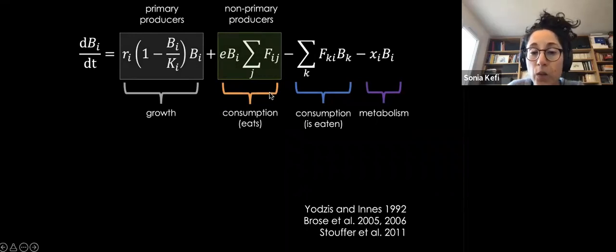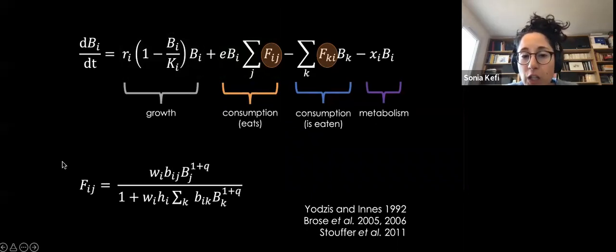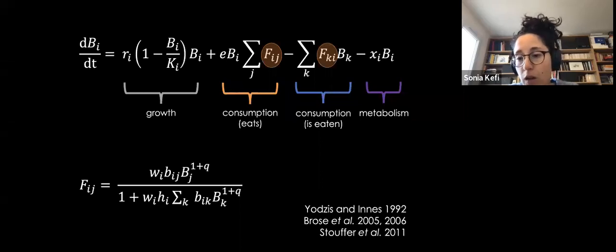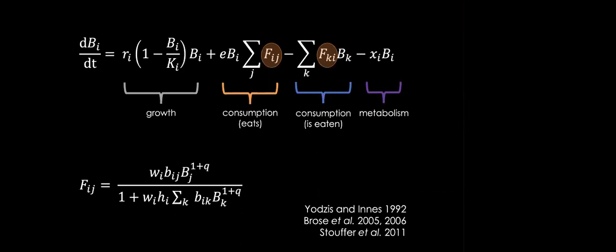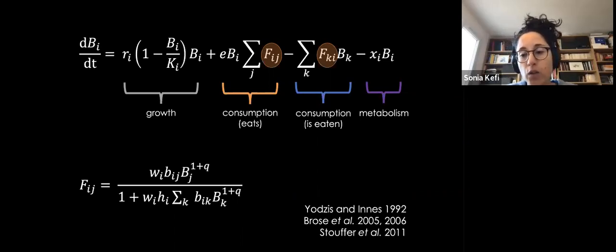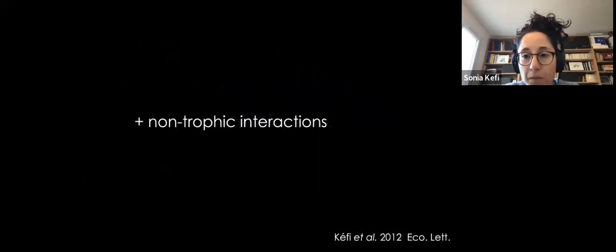The functional response is a multi-prey Holling type functional response. We use allometric relationships to define most parameters in the model — meaning if you know the average body mass of an individual species or group, you can use general relationships to parameterize most feeding terms in the model. We also have the ecological network, so we map this dynamical equation to the food web observed in the field.